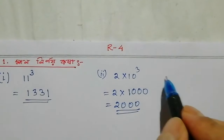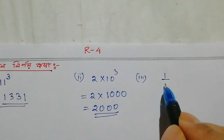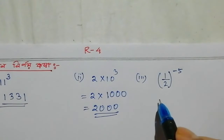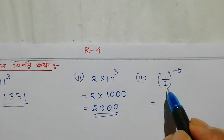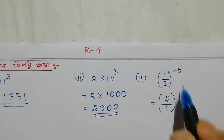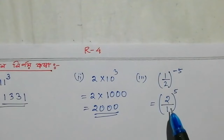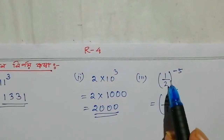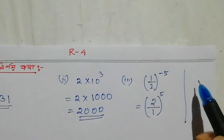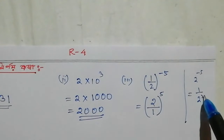Number 3 is equal to 1 by 2 to the power minus 5. The power is equal to minus. Here we go to 1. That is, 1 by 2 is equal to 1. I'll give you an example of 2 to the power minus 5. So, the power is equal to 2 to the power minus 5.